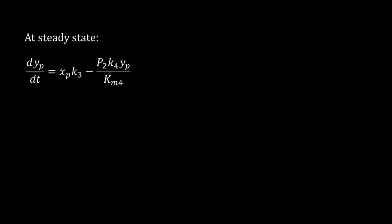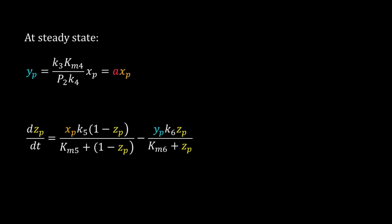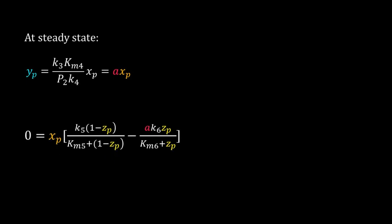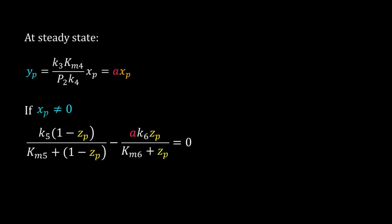Now let's do the steady-state analysis for yp. Set dyp/dt equal to 0. By rearranging terms we get yp is equal to a*xp, where a is a constant. Now get the steady state of zp. Set dzp/dt equal to 0, replace yp by a*xp at steady state, and rearrange the terms. If xp is not equal to 0, then the terms inside the bracket equal 0. This is similar to what we got for our molecular switch earlier.